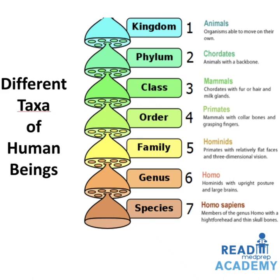The different taxa of human beings: humans belong to kingdom Animalia — organisms able to move on their own. They belong to phylum Chordata — animals with a backbone. They belong to class Mammalia — chordates with fur or hair and milk glands. The order is Primates — mammals with collarbones and grasping fingers. The family is Hominidae — primates with relatively flat faces and three-dimensional vision. The genus is Homo — hominids with upright posture and large brains. And species is Homo sapiens — members of genus Homo with a high forehead and thin skull bones.